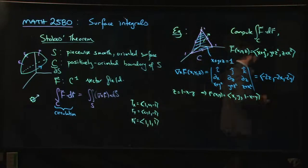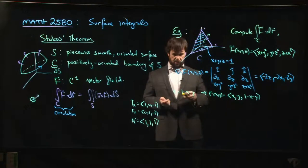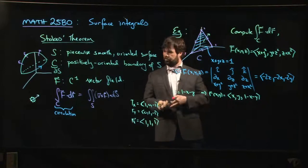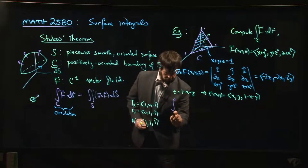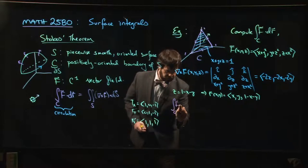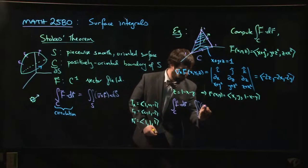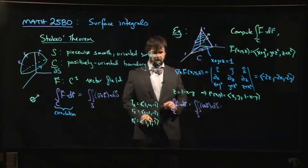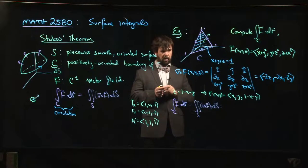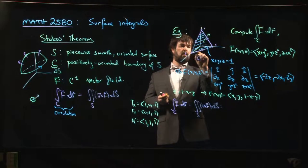So we've got the right normal vector, we've got our parameterization, so we can set up the integral. We can use Stokes' Theorem. So Stokes' Theorem now is going to say that the integral around C of F · dr is the same thing as the integral over S of the curl · dS. And we're going to parameterize a parameter domain. What's our parameter domain? Our parameter domain is this triangle down here in the xy-plane.